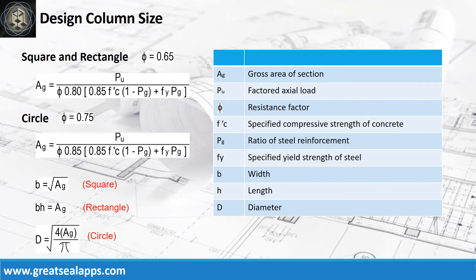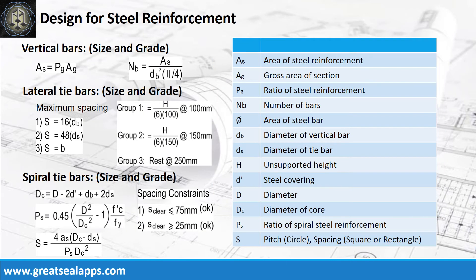Solve the gross area of the column section AG from the factored load and design criteria. For a circular column, get the diameter. For a square column, get the side. For a rectangular column, get the length and width. Solve the area of steel from the gross area of section and steel ratio to get the number of vertical bars. Follow the given computations of lateral tie bars for square and rectangular columns, and a computation for spiral tie bars.